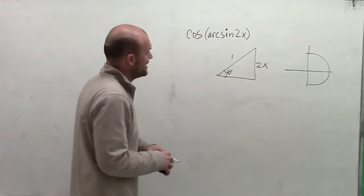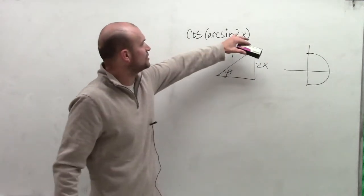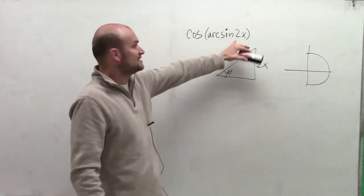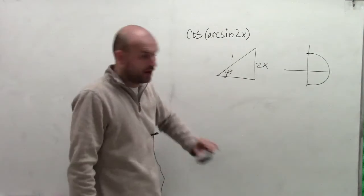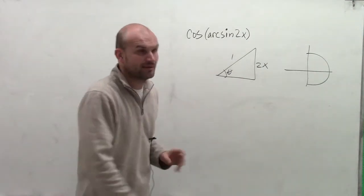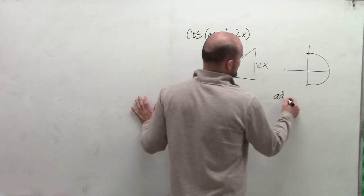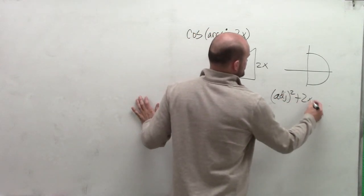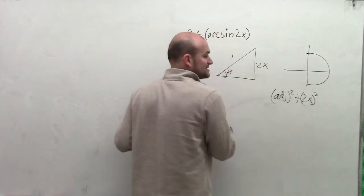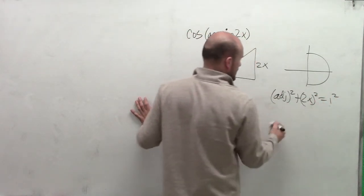Now that I have my opposite side, and remember, sine is opposite over hypotenuse. And since I don't have a denominator, I know that it can be 1. Now I need to go ahead and determine what my other leg is. So what I can do is I can say my adjacent side, which would be my other leg squared, plus 2x, which is my opposite side leg, equals 1 squared.